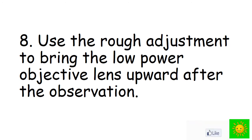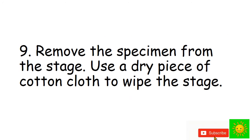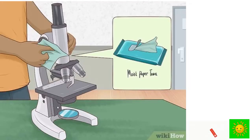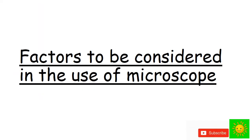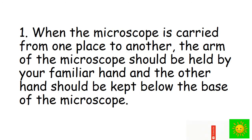A sharp and clear image can be obtained by adjusting to the medium and high power objective lens if necessary. Use coarse adjustment to bring the low power objective lens upward after observation. Remove the specimen from the stage and use a dry piece of cotton cloth to wipe the stage.